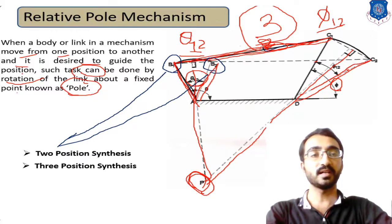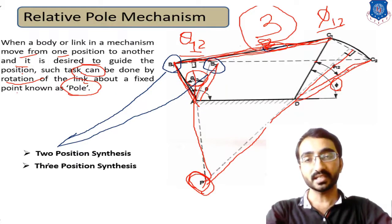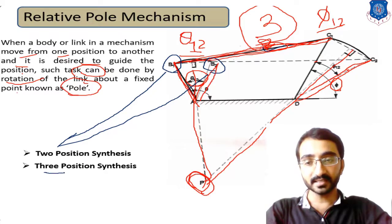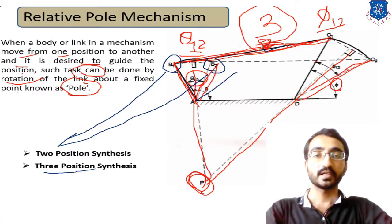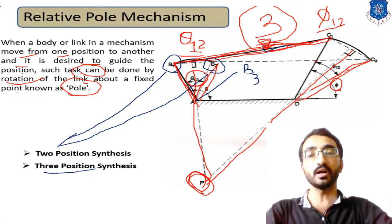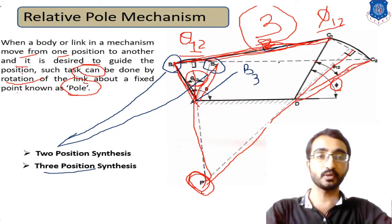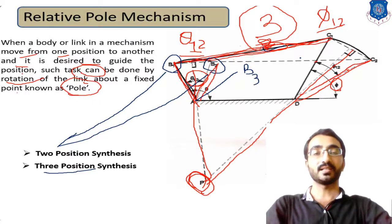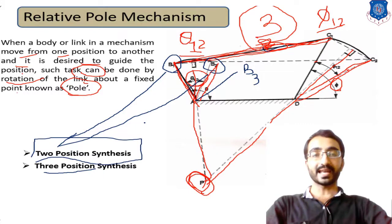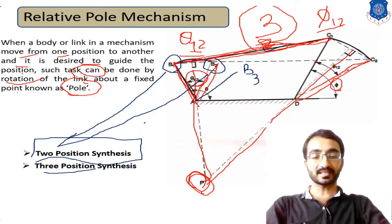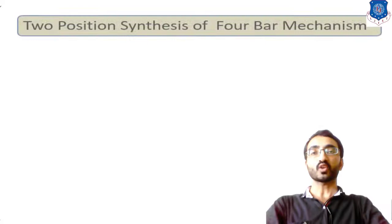With the help of these two positions, we calculate the lengths of the other two elements. Similarly, in three-position synthesis, we have three different positions B1, B2, and B3 given, and with these we calculate the lengths of different other elements. Let's start with two-position synthesis of a four-bar chain mechanism, and in the next session we will cover the single slider mechanism.